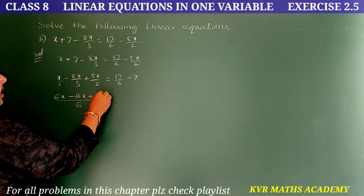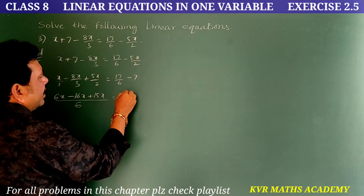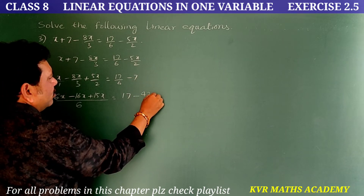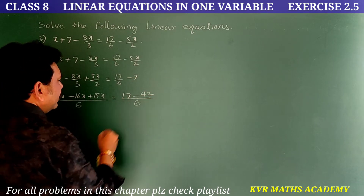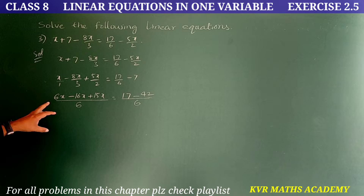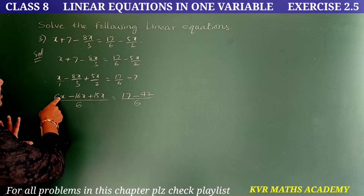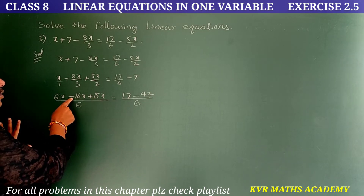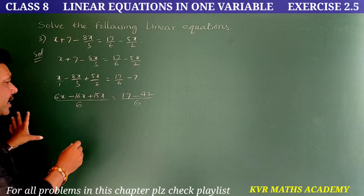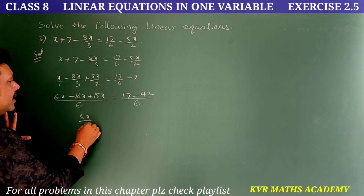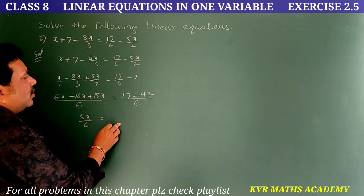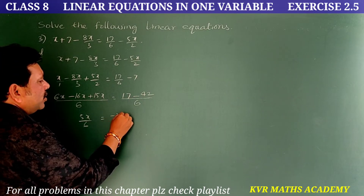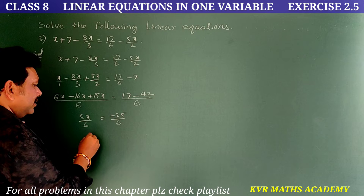On the LHS: 6x + 15x = 21x, minus 16x gives 5x. On the RHS: 17 - 6×7 = 17 - 42 = -25. So 5x/6 = -25/6.